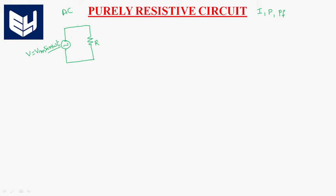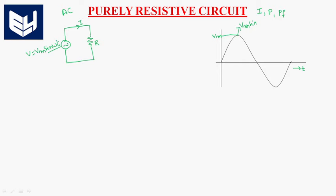Now we will study what is the current that will flow through the load when an alternating nature of voltage is given to the circuit. The sine wave — this is the sine wave — Vm is the maximum voltage. So this wave is Vm sin ωt.